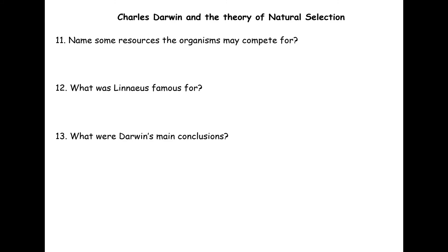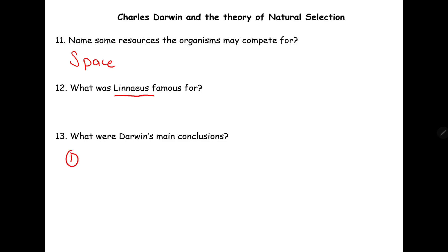A few questions to think about how natural selection occurs. First, name some resources which an organism may compete for — one example is space. Try to come up with about three more different things an organism will compete for. Second, who was Linnaeus and what was he famous for? Carolus Linnaeus was a Swedish scientist famous for his work in biology — you can search this up if you don't remember. Finally, what were Darwin's main conclusions? You should be able to write this down in at least three points.